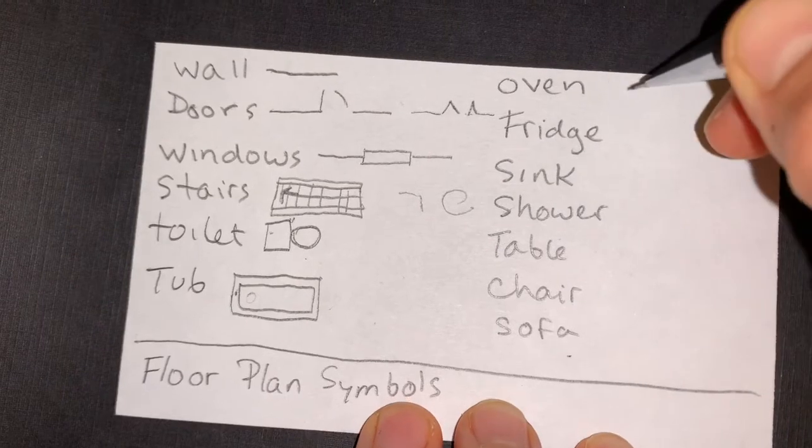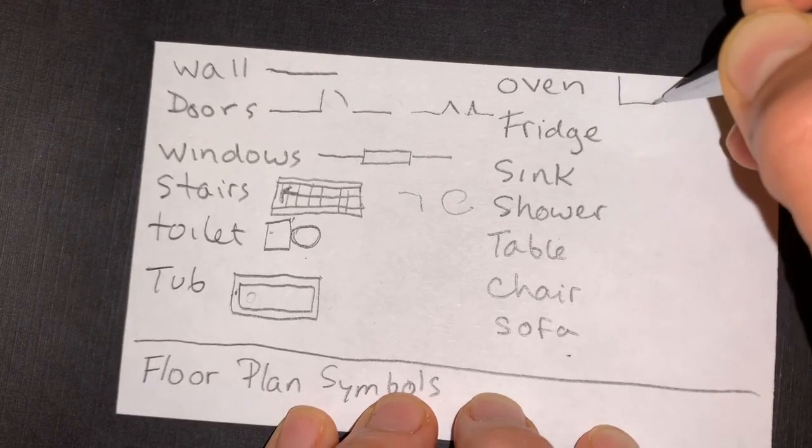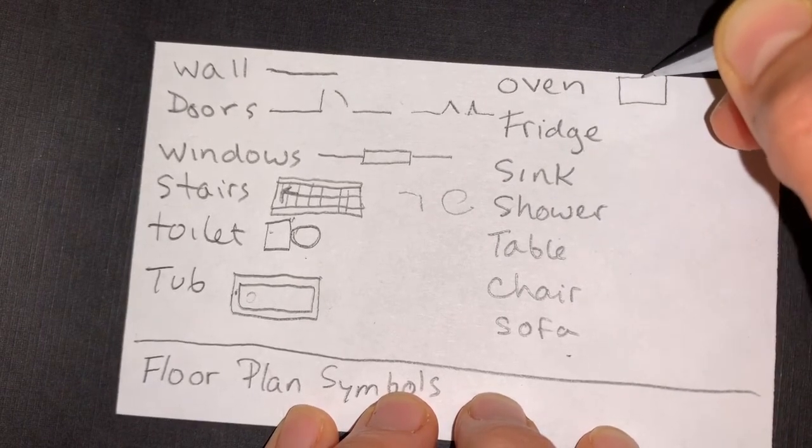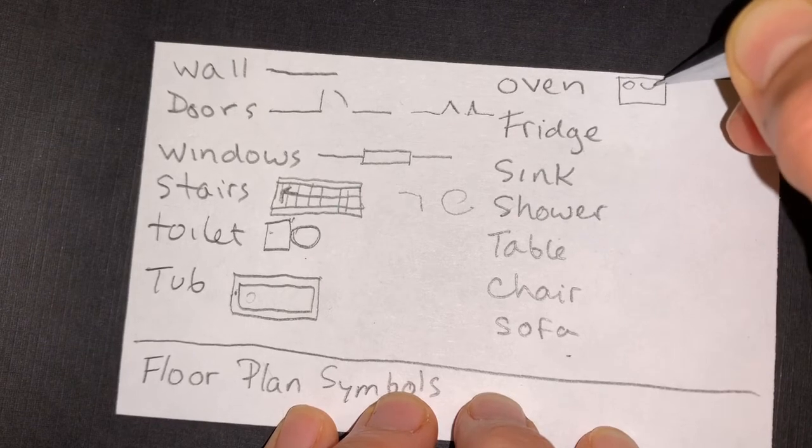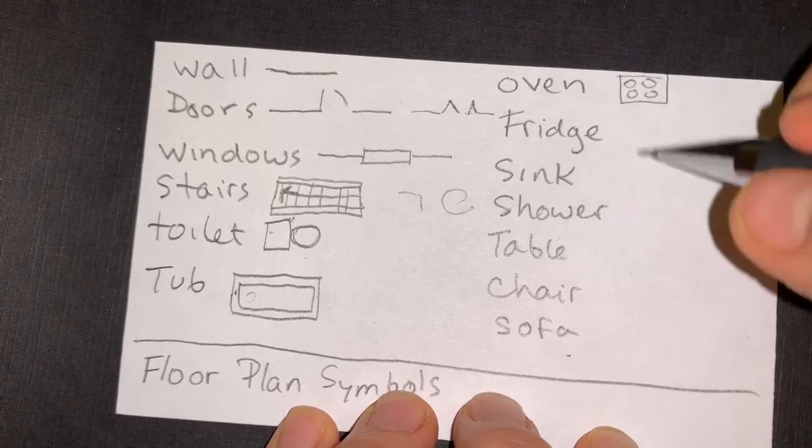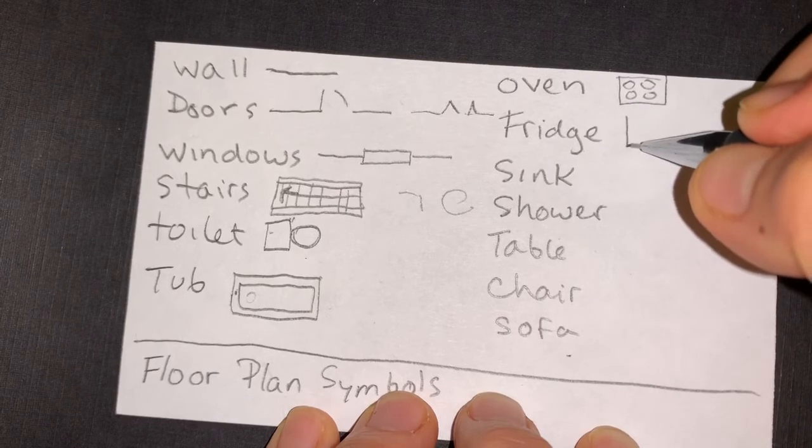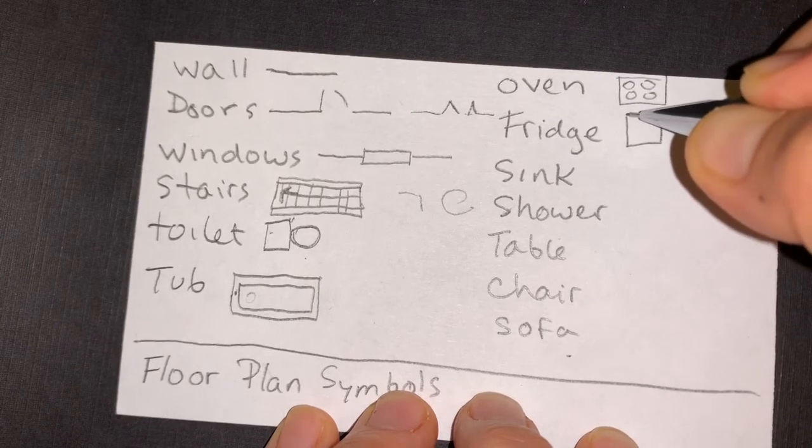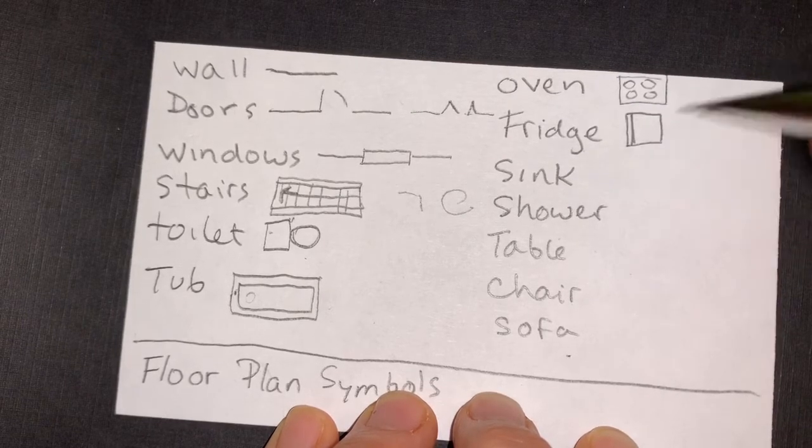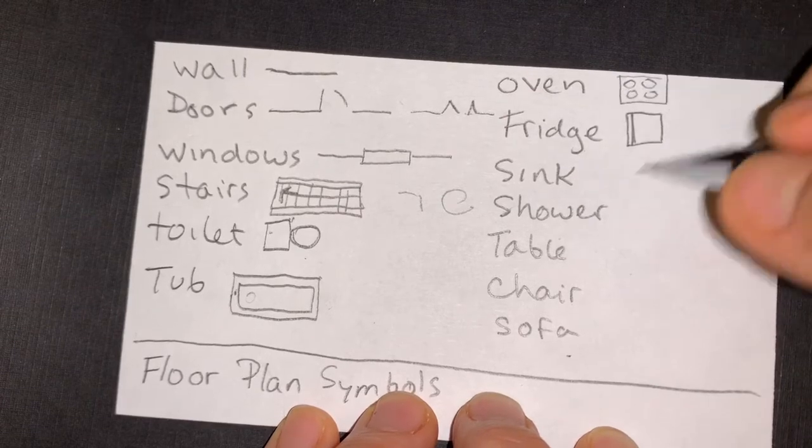An oven is just a square and that shows the burners on top. A fridge is a square or rectangle and then it shows the door opening here in any direction.